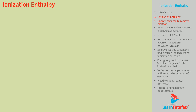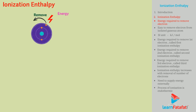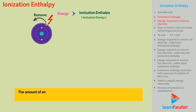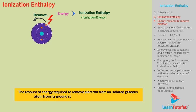Introduction to the term Ionization Enthalpy. Definitely, to remove an electron, an amount of energy will be needed. This energy is the Ionization Enthalpy, also known as Ionization Energy. The amount of energy required to remove an electron from an isolated gaseous atom from its ground state is called Ionization Enthalpy.